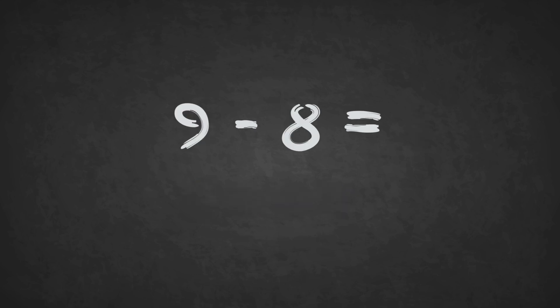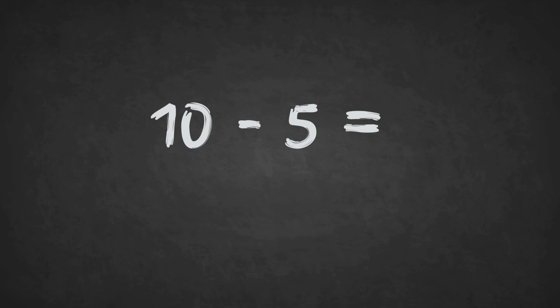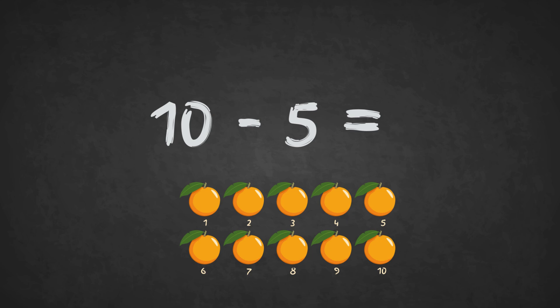9 minus 8 equals? 1. The answer is 1. 10 minus 5 equals? 1, 2, 3, 4, 5. The answer is 5.